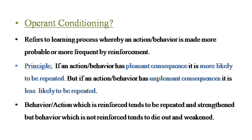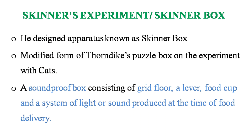So what is operant conditioning? Operant conditioning is a learning process in which an action or response is made more probable or likely to happen again — more frequent — by reinforcement. In simple terms, the principle is: if an action or behavior has a pleasant consequence, it is more likely to be repeated; but if it has an unpleasant consequence, it is less likely to be repeated. Behavior that is reinforced tends to be repeated and strengthened, while behavior that is not reinforced tends to die out and weaken.